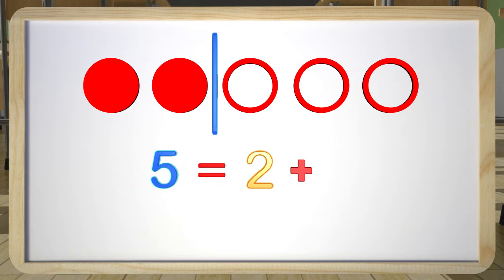Now how many circles are on the right side of the line? Three, you are correct. This is another combination of numbers that make up the number five. We have two plus three which gives us five. This is way cool stuff.